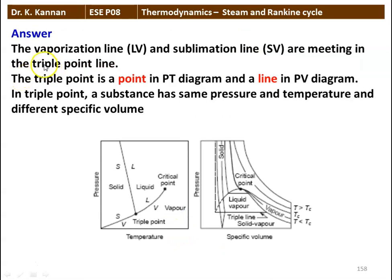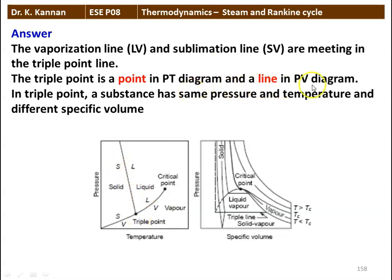We will see how in the next slide. Here we have the answer. The pressure-temperature and pressure-specific volume diagrams of the vapor are shown here. The vaporization line LV and the sublimation line SV are meeting in the triple point line. The triple point is a point in the PT diagram. This is the SL diagram, this is the SV sublimation line, this is the liquid-vapor line, solid-liquid line — so this is the triple point. And in the PV diagram, the triple point line is shown by a line, where pressure is constant along the line but specific volume is changing. So, in the triple point, a substance has the same pressure and temperature but a different specific volume. That is the answer.